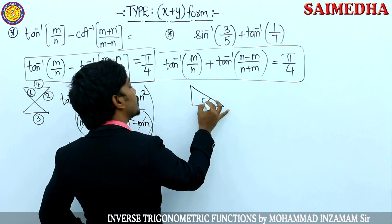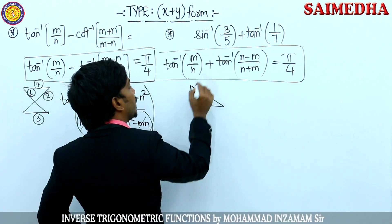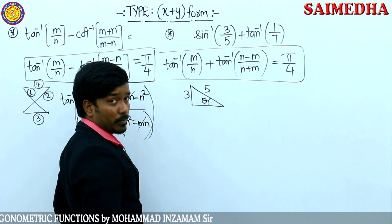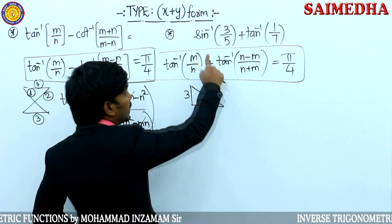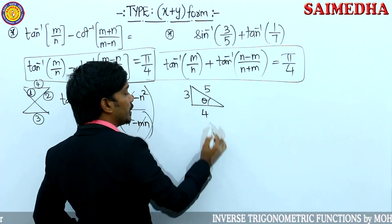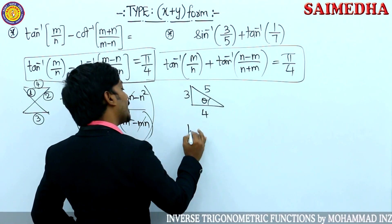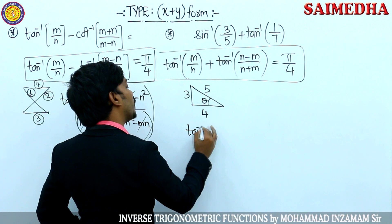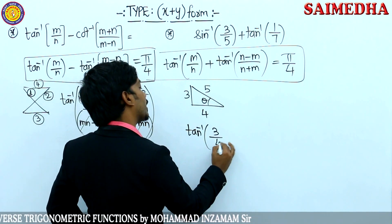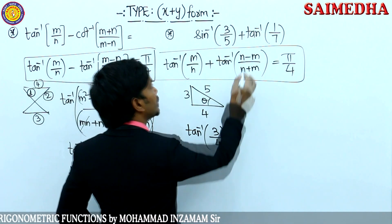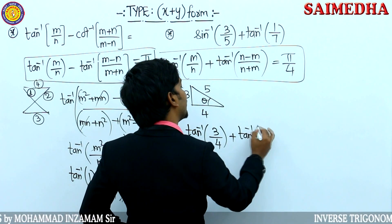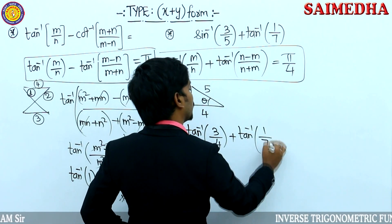Draw a triangle. Opposite by hypotenuse — that is the sin inverse form. Opposite is here, hypotenuse is here. Applying the triangle formula: opposite by hypotenuse, adjacent can be found. Writing it in the form of tan inverse of opposite by adjacent. Then tan inverse of 1 divided by 7.